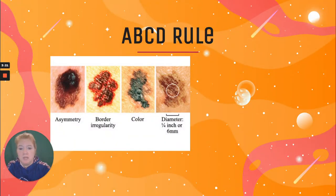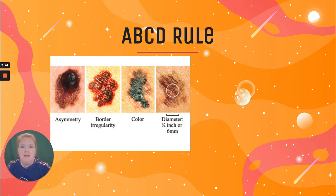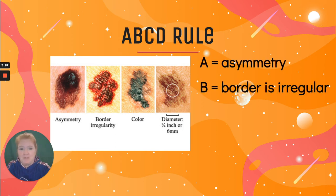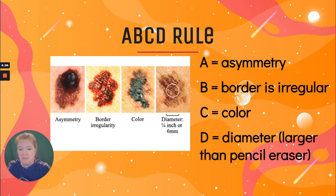There are some rules to help determine whether a mole or discoloration on your skin is worth seeing a doctor about. A is for asymmetry — is it the same on both sides? B is for border — is it smooth or irregular? C is for color, specifically if the color has changed. And D is for diameter — if it's greater than a quarter inch, or bigger than a pencil eraser, it might be something to get checked out. Anything falling into one of those categories, you'll want to see your doctor and probably a dermatologist.